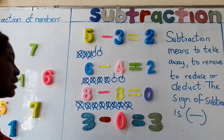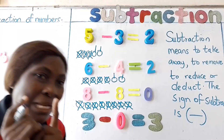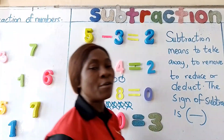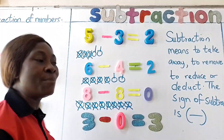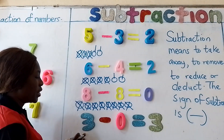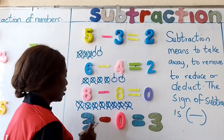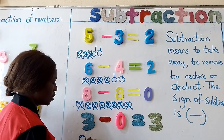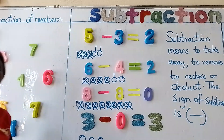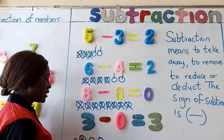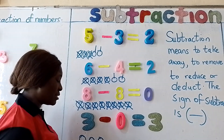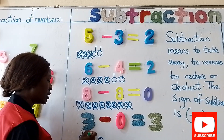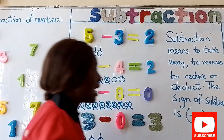Then another rule that applies in subtraction: when you take away zero from any number, the number stands. For example, three take away zero will give me three. I have one, two, three — those are my counters. Take away nothing, because zero means nothing. Take away nothing — what do I still have? I have my number three back: one, two, three. That is my answer.